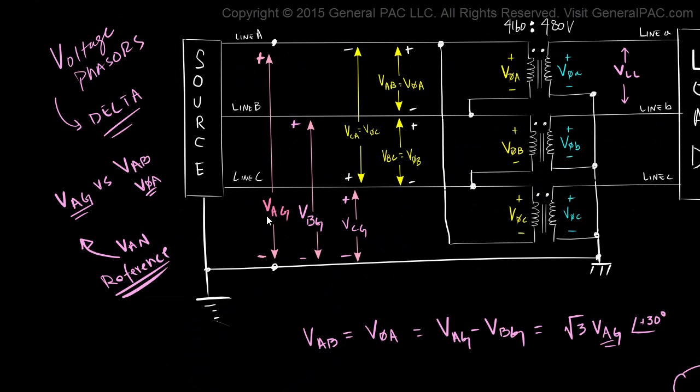Why are we doing this? Let's step back and understand exactly what's going on here and why we're doing this. We want to understand the relationship between Vag and Vab. Because that's what's going to help us understand the voltage phasor diagrams for the delta connection. Is that making sense?